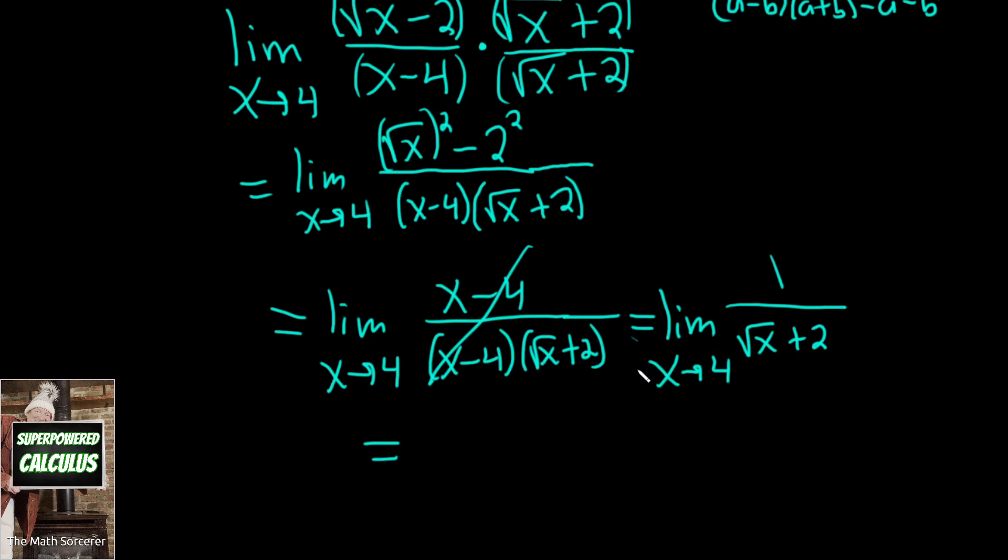Remember, always drop the limit sign when you plug in the number. So this is 1 over the square root of 4 plus 2, which is equal to 1 over. Well, the square root of 4 is 2, so we get 2 plus 2, which is equal to 4. So we end up with 1 over 4.